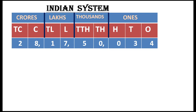Here I used commas to separate the periods. After 2, 8, 1 there is a comma — that comma separates the crores and lakhs period. After 7, you can see one comma — that comma separates the lakhs and thousands period. After the zeros, you can see one comma — that comma separates the thousands and ones period.